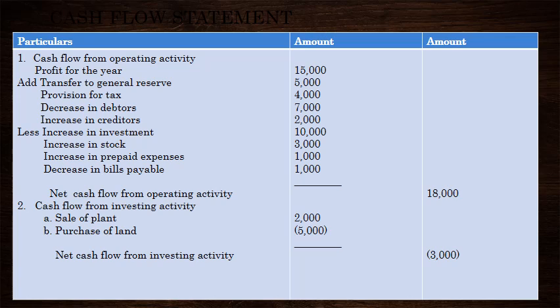Decrease in bills payable, difference amount is $1,000. If you want to add a profit, then you will be less than $1,000. If you want to add $2,000, then we will be less than $1,000. $1,000 plus $5,000 plus $4,000 plus $7,000 plus $2,000. If you want to add $1,000, $3,000, $1,000 less than $1,000. If you want to add $1,000, $1,000, $1,000.